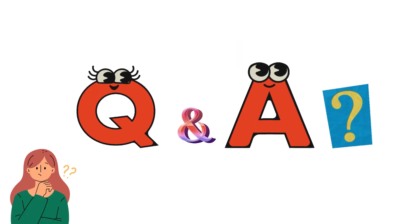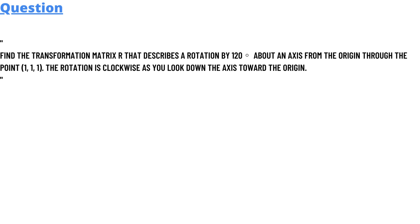So let's get to the question. Our today's question is: Find the transformation matrix R that describes a rotation by 120° about an axis from the origin through the point (1,1,1). The rotation is clockwise as you look down the axis toward the origin.